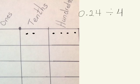This problem is 24 hundredths divided by 4. If I show this in my place value chart with 2 tenths and 4 hundredths, it's pretty hard to divide that by 4. But if instead I show it with only the smallest units, hundredths, now I can divide by 4.